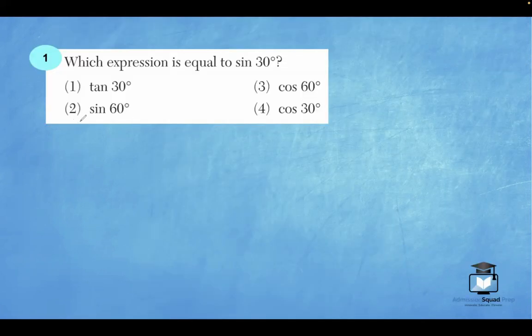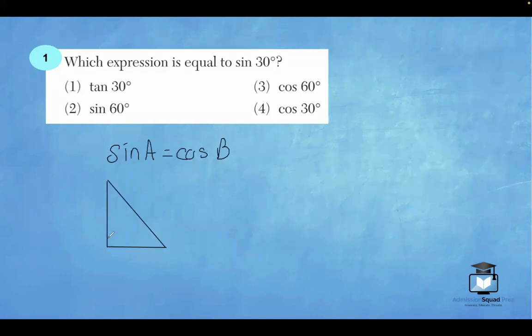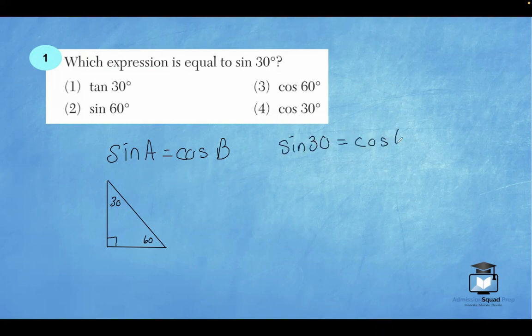So let's go ahead and get started. Question number one, which expression is equal to sin 30°? In general, there's a rule that the sine of A is equal to the cosine of B. What that means is if I have a right triangle, meaning one of the angles is a 90 degree angle, and then we have two remaining angles that are complementary, let's say this is 30 degrees and this is 60 degrees. The sine of 30 degrees is going to be equal to the cosine of 60 degrees.